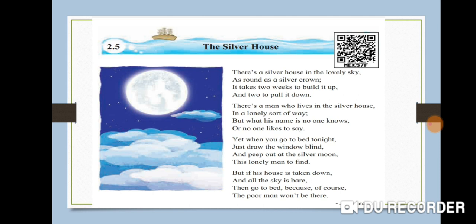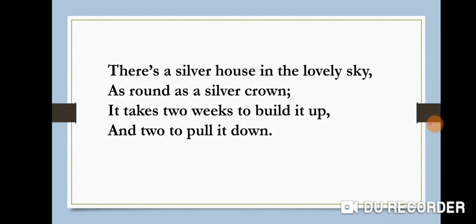Let's see the first stanza. There is a silver house in the lovely sky — the poet says there is a beautiful sky, and in that lovely sky there is a beautiful silver house. It is as round as a silver crown. The silver house has a round shape and it has a silver color.